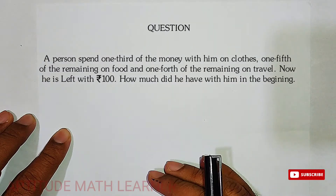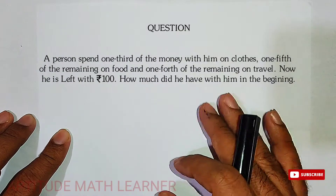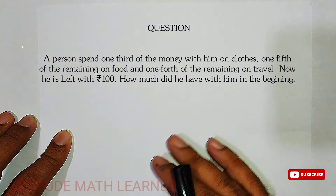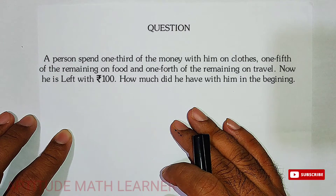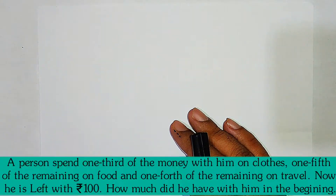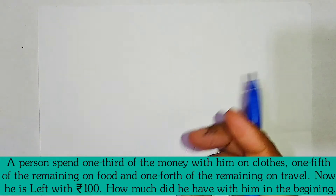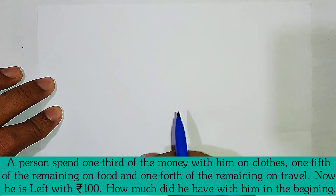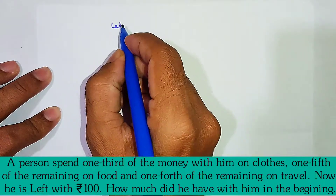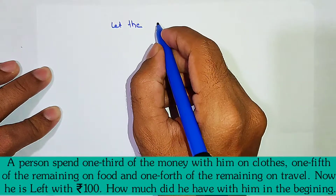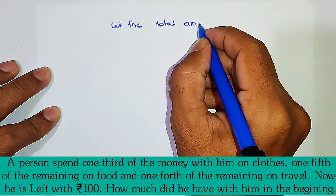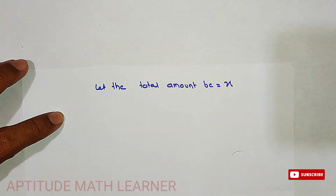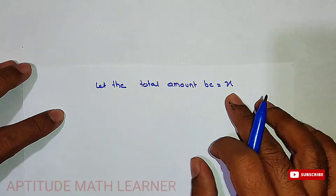This question can be solved in two methods — the complete step-by-step method and the shortcut method. I believe there is no substitute for understanding the complete method, but I will also teach you the shortcut. Let the total amount the person had be x.